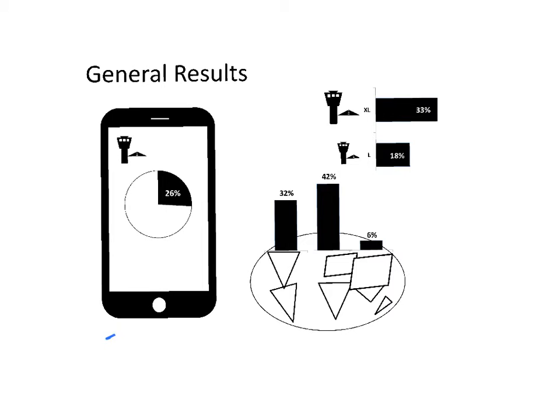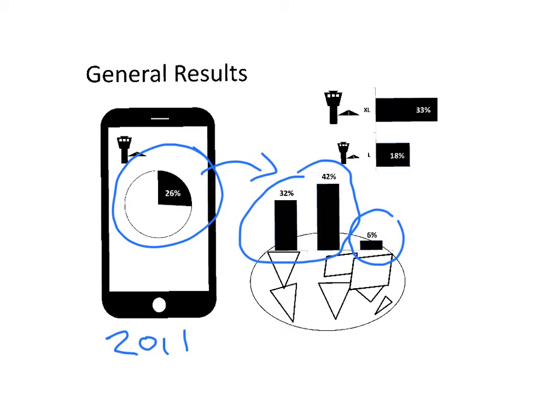As general results, gathered in 2011, 26% of airports surveyed were providing mobile websites. When looking at geographical distribution, North America and Europe were much more likely to provide mobile websites than Asian airports. When looking at size, XL and L, there is a small difference, but it is not a very clear difference between larger airports and smaller airports.